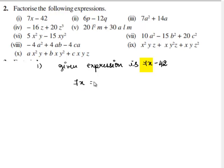So consider 7x which can be written as 7 times x and considering 42 which can be written as 7 times 6. Now rewriting the given expression using the factors.